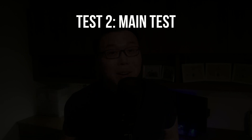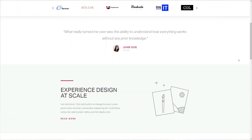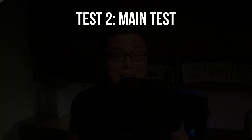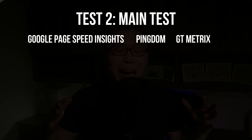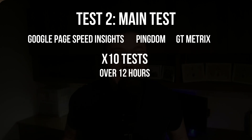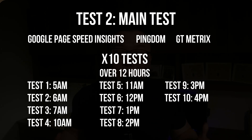The second test, which is the most important, is creating a simple landing page from scratch right in front of you so you know there's nothing to hide. Although I'm critical of page builders, I want to make this experiment objective and not based on my opinion — transparency is the goal. For accurate results, instead of running just three rounds of tests on Google PageSpeed Insights, Pingdom, and GTmetrix, we will do a total of 10 tests over 12 hours, then average the results for a fair and objective outcome.